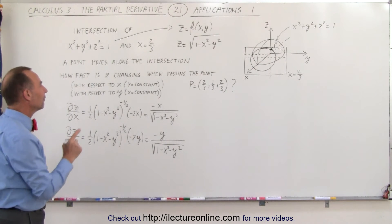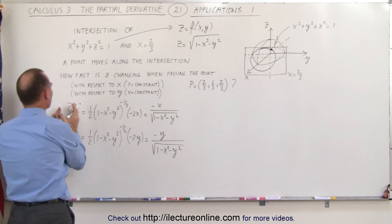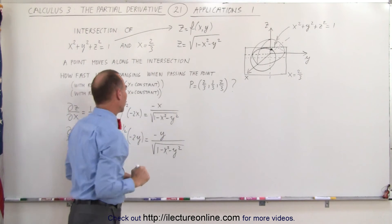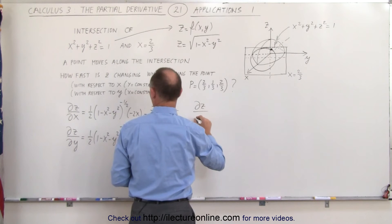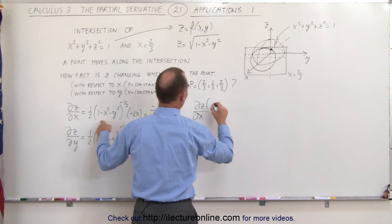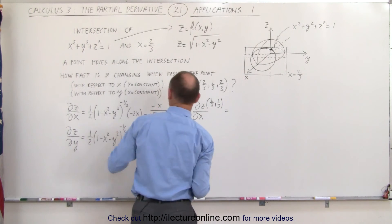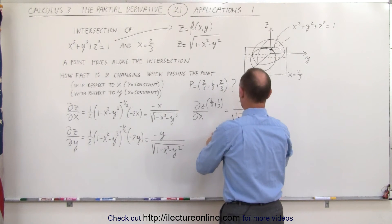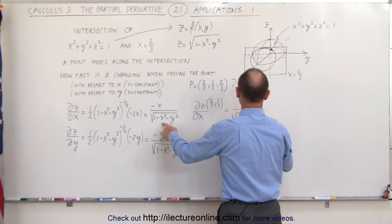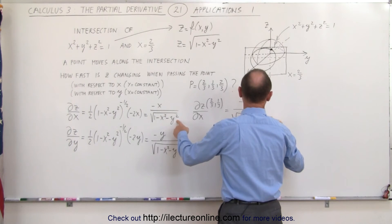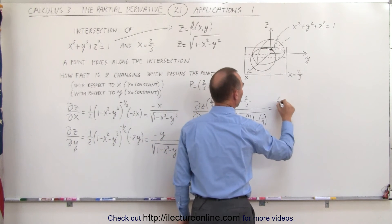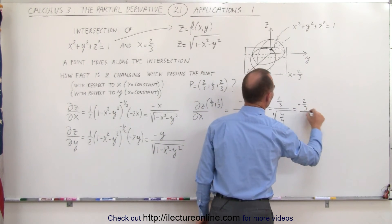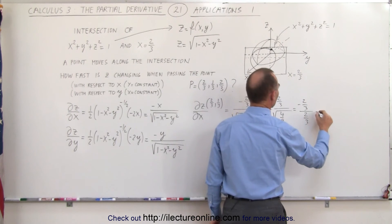Now we plug in the values x equals two-thirds and y equals one-third. The partial of z with respect to x equals minus two-thirds divided by the square root of one minus four-ninths minus one-ninth. That's one minus five-ninths, which is four-ninths. So we get minus two-thirds divided by two-thirds, which equals minus one.